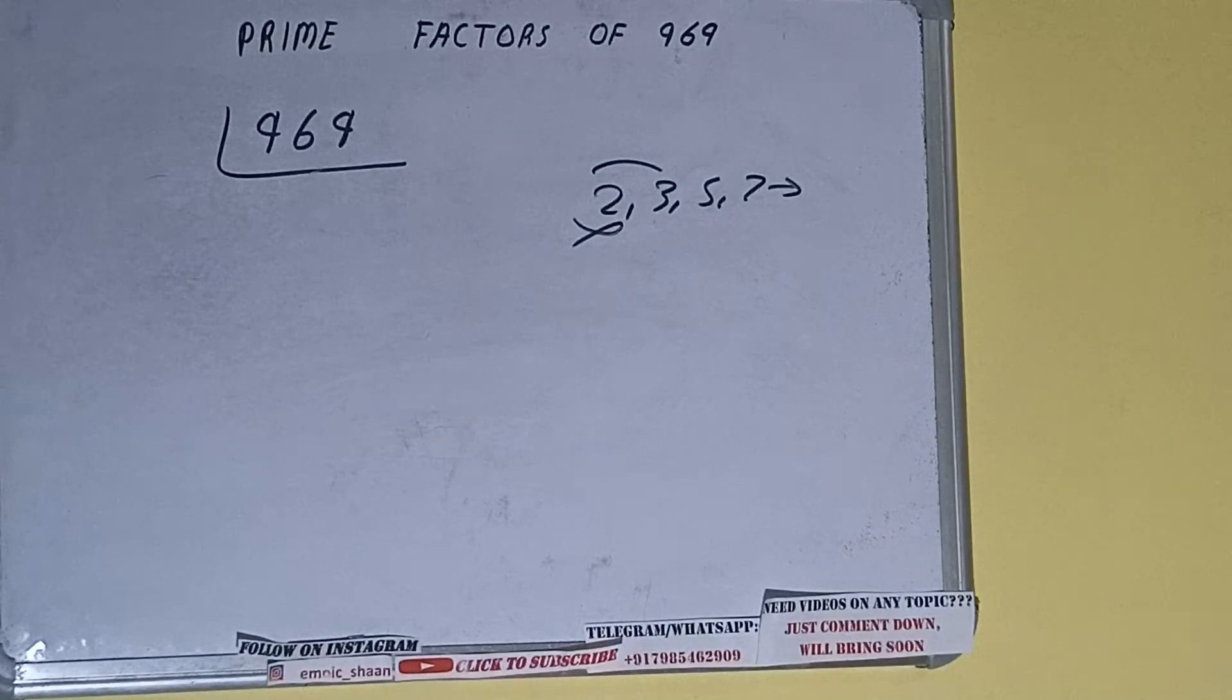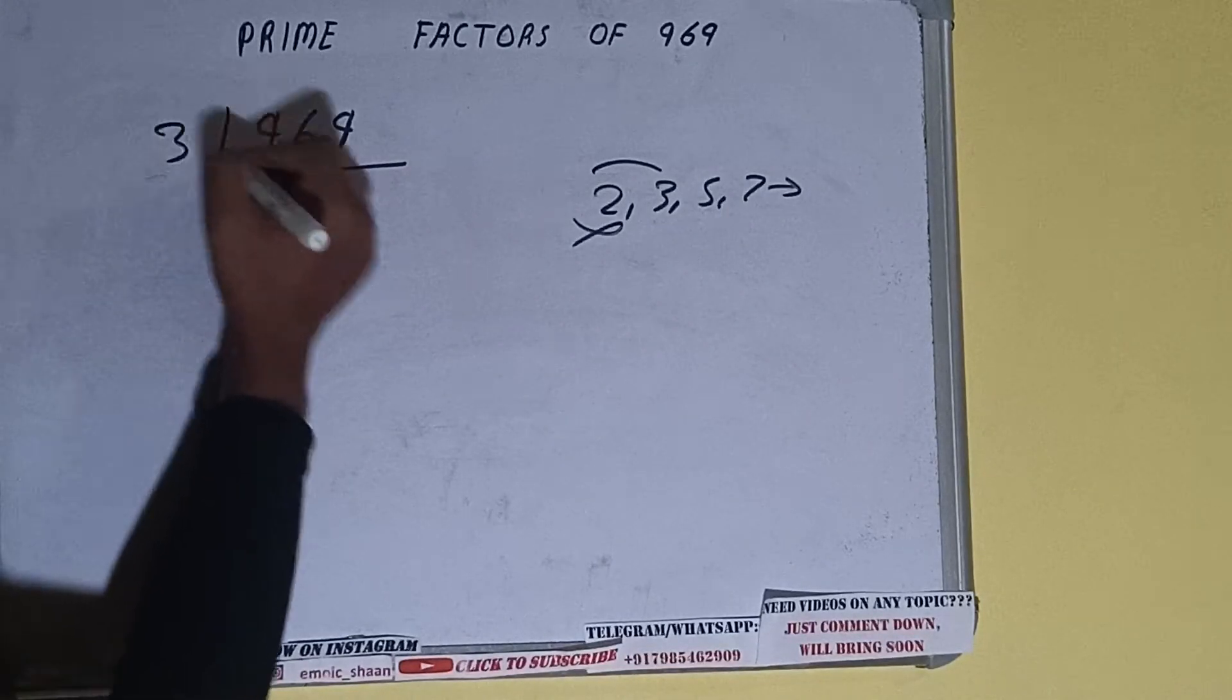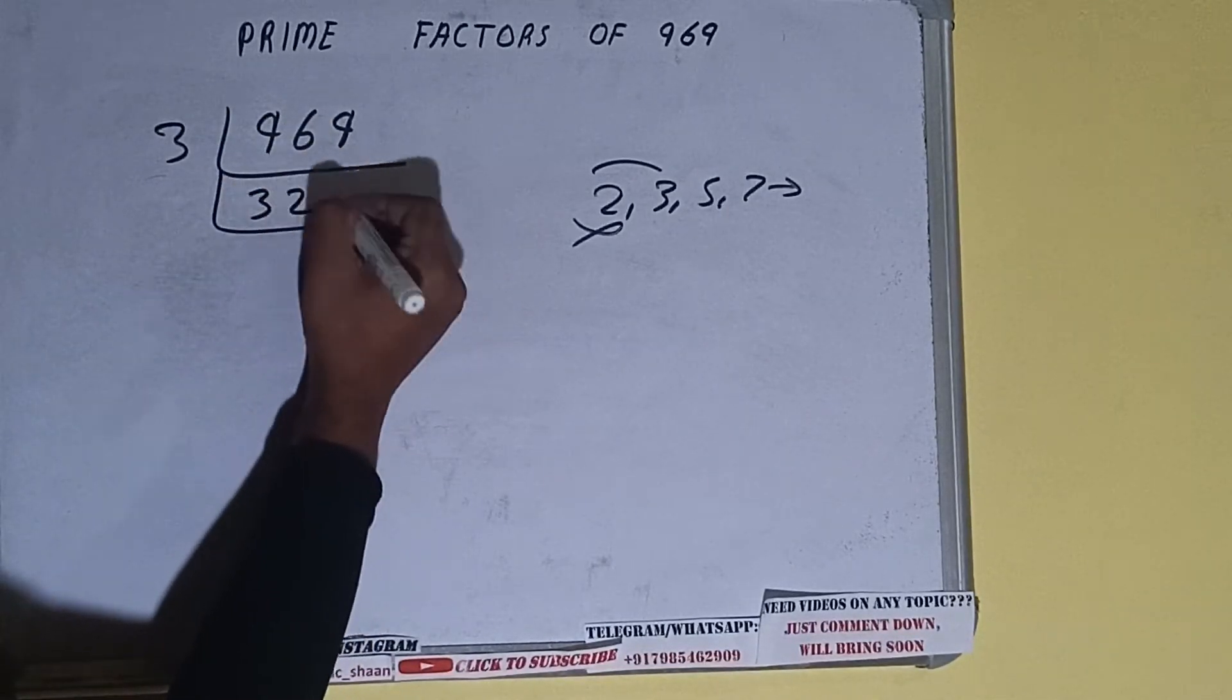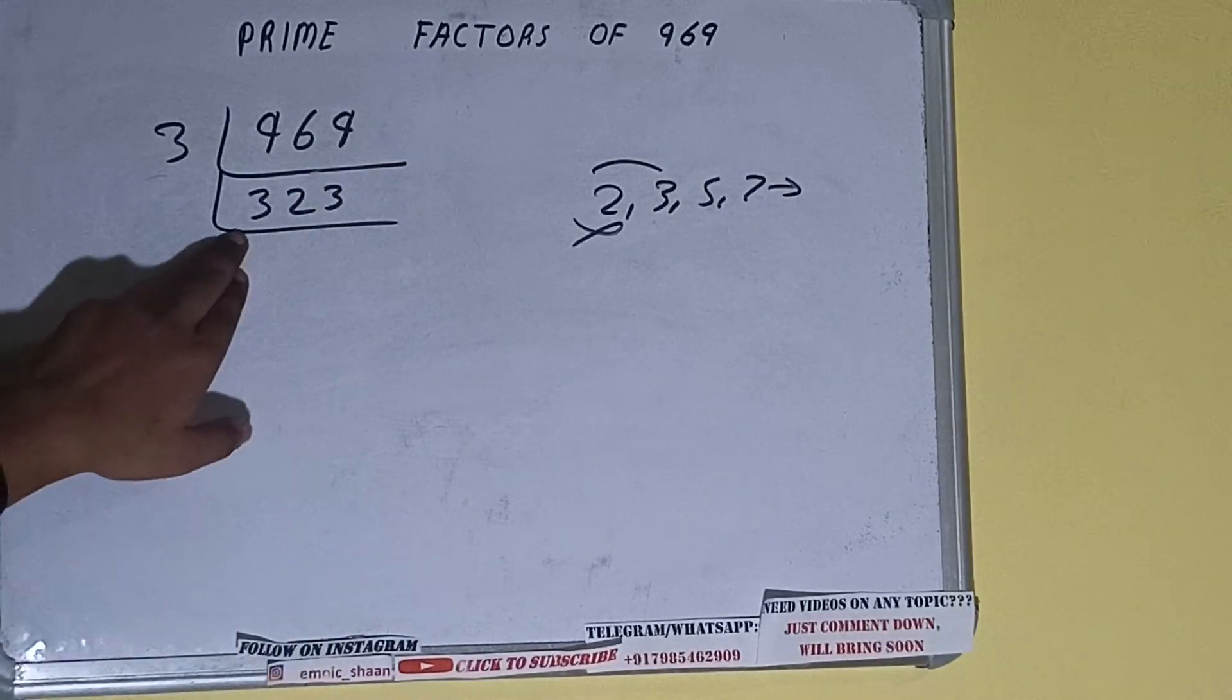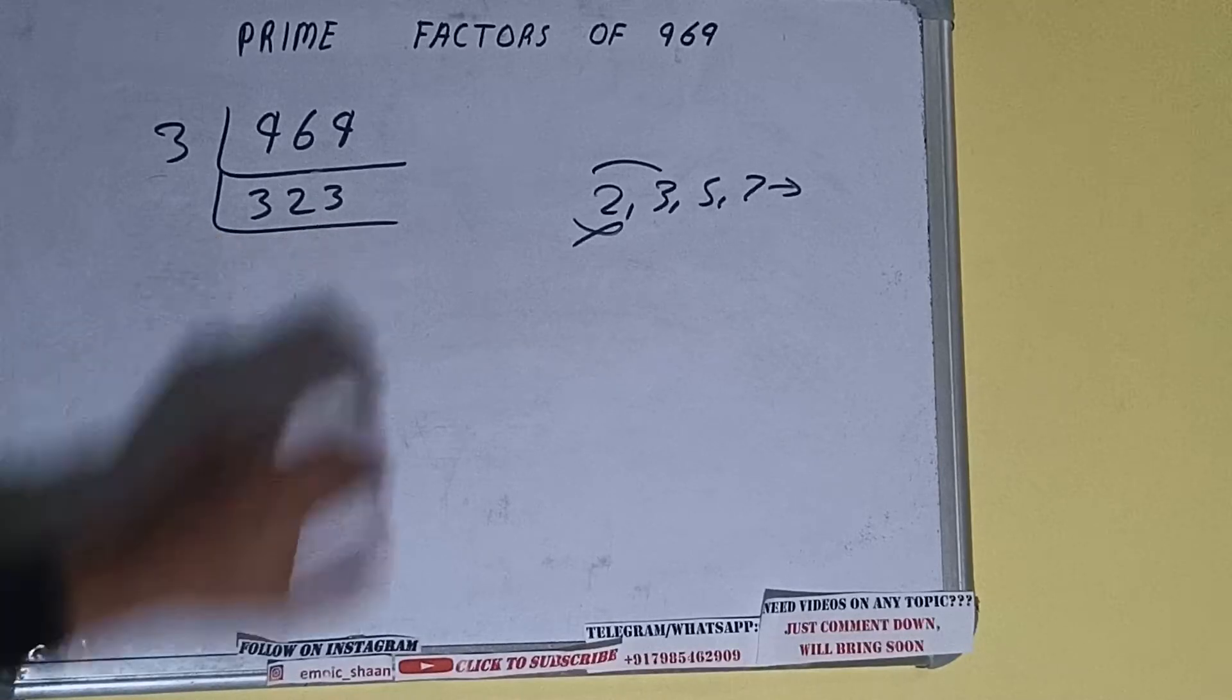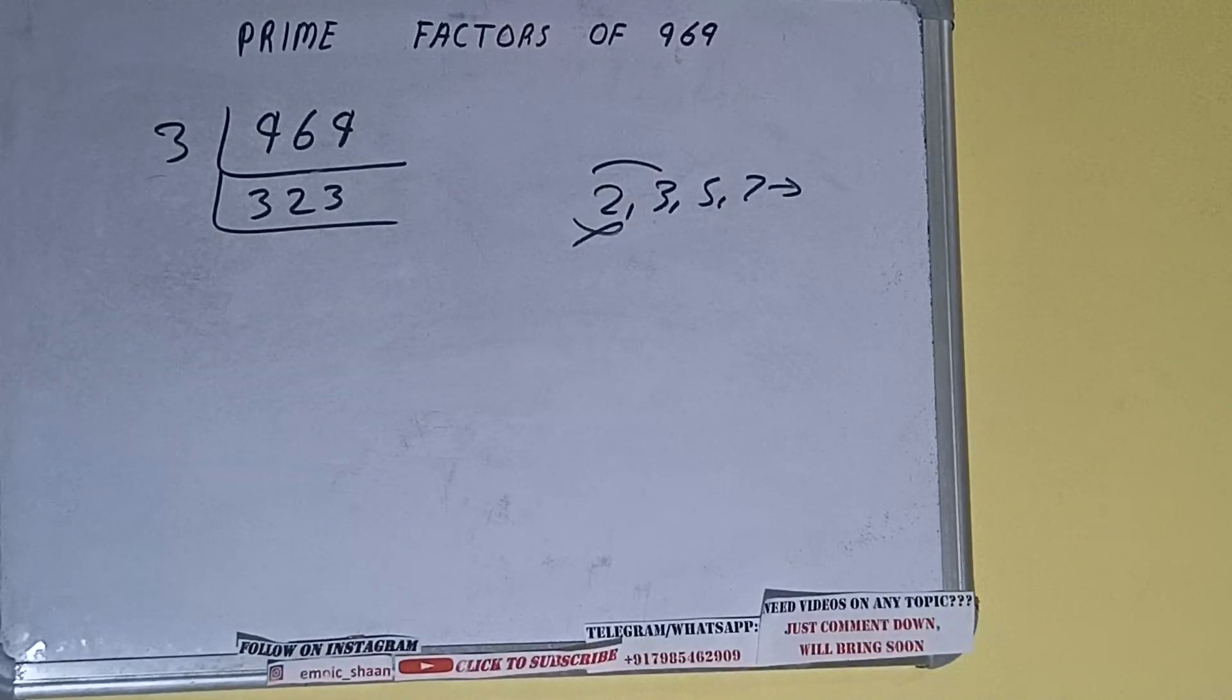So divide it and we'll be having 323. This again we check if divisible by 3. If we check, 3 plus 2 is 5, 5 plus 3 is 8. It is not divisible by 3.